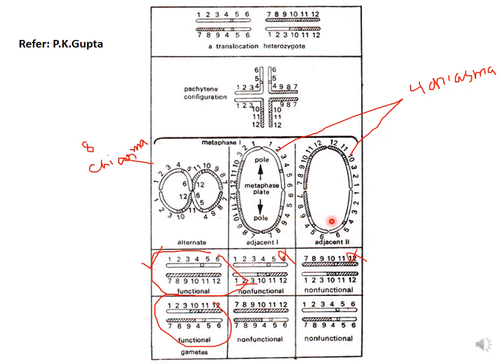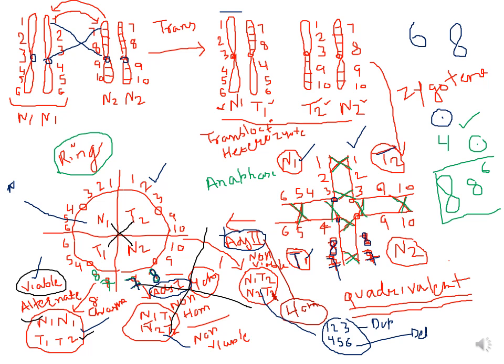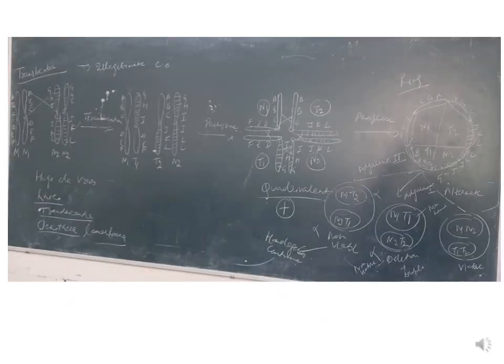In adjacent two, adjacent chromosomes also go to the same pole. A ring-shaped structure is found during metaphase and anaphase due to four chiasma formation. Out of these three orientations, viable gametes are formed only in the alternate orientation; in adjacent one and adjacent two, non-functional gametes are produced due to duplication and deletion of genes. So we find a plus-shaped structure and a ring-shaped structure after translocation. This covers the whole process of translocation from translocation heterozygote to plus-shape and ring-shape structures — we will discuss more in part two of this lecture. Thank you, students.